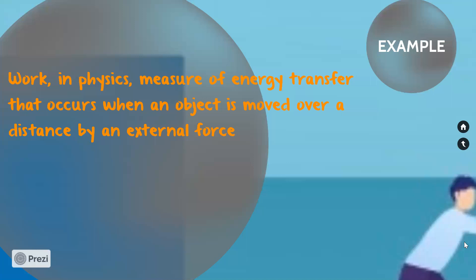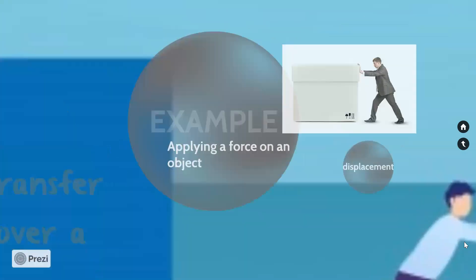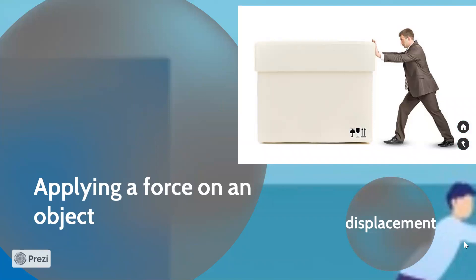Also, if the initial position and final position are the same, the displacement is zero and work done will be zero. The definition of work is the measure of energy transfer that occurs when an object is moved over a distance by an external force. For example, if a force is applied to a box and the box moves, then we say the person is doing work on the box.